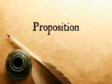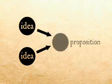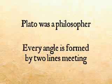Let us look at how ideas are joined. A proposition is a sentence wherein two or more ideas or terms are joined or disjoined by one affirmation — something that affirms it to be true — or by a negation, something that shows that they do not join. For example, the statements 'Plato was a philosopher' and 'Every angle is formed by two lines meeting' are both propositions, where two ideas or terms are joined or disjoined by an affirmation or negation.